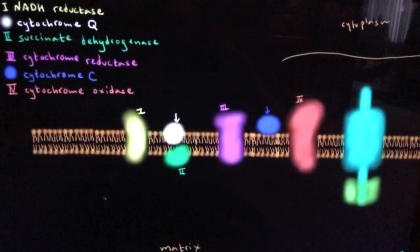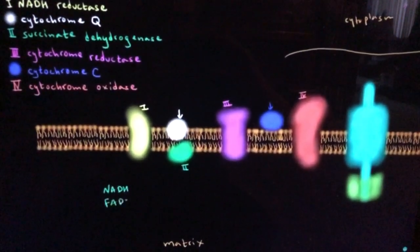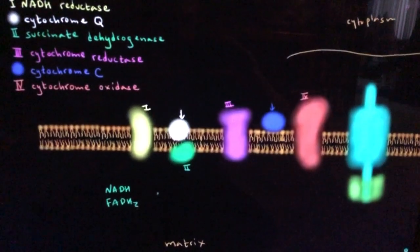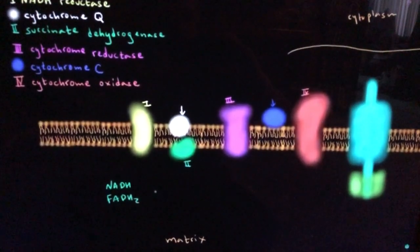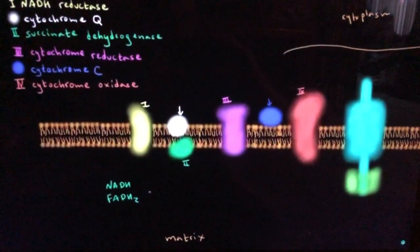So we have NADH and FADH2, which were produced during the Krebs cycle. And these are our electron carriers. And I'm going to describe what happens to NADH, but the same thing happens to FADH2.